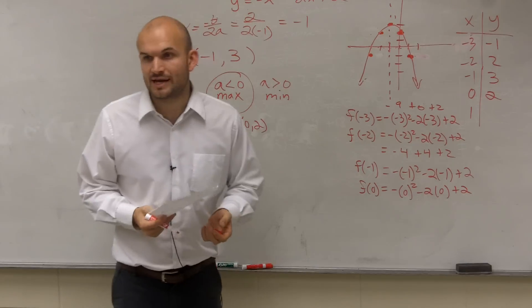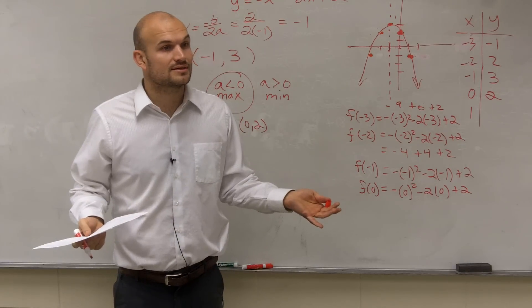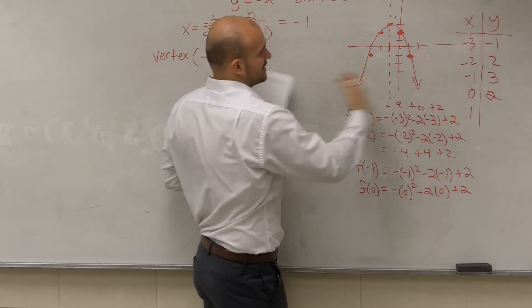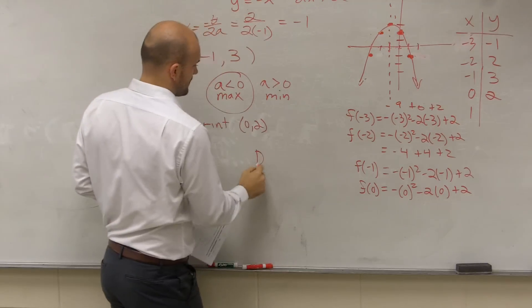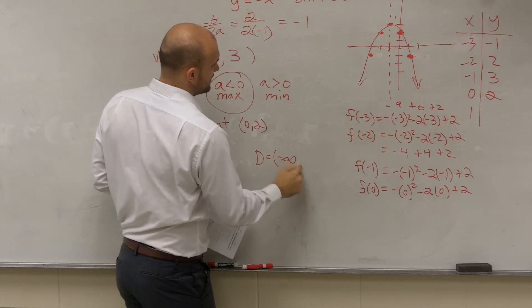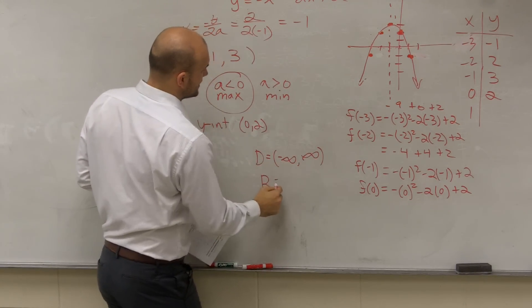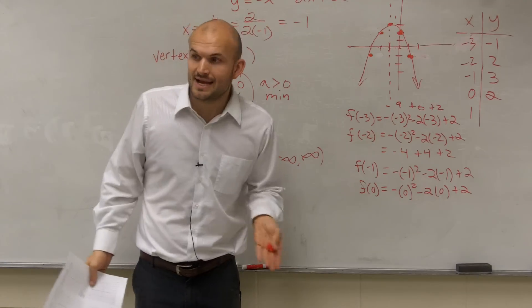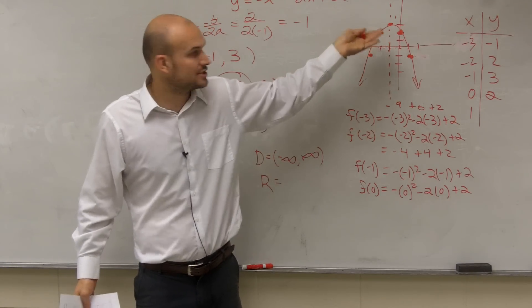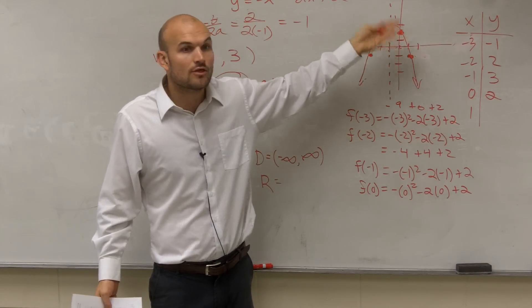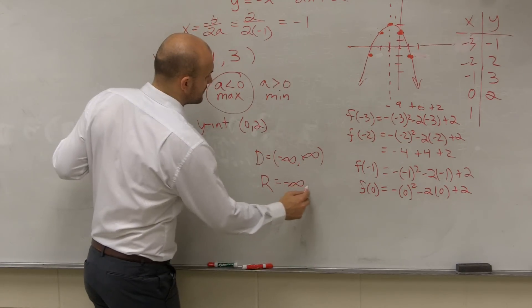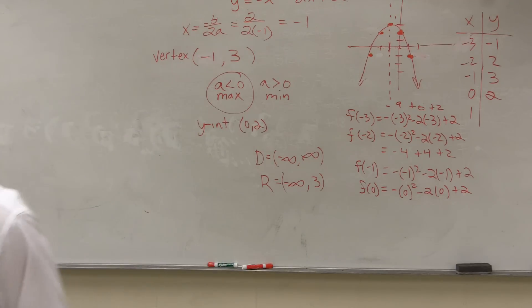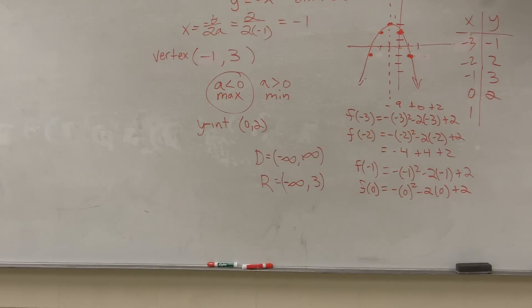And then the last thing, we need to determine the domain and range. Remember, for parabolas, our domain is always going to be negative infinity to infinity, right? These are going to keep on expanding. So my domain is going to be from negative infinity to infinity. And my range, we look at what are the constraints. The constraint is the maximum value, right? You can't have anything that's higher than what your maximum value is. And your maximum value is what? 3. So therefore, my range is from negative infinity to 3. And there you go. That's just figured out all that information. Have any questions?